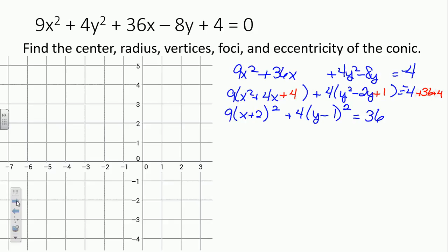Last step to get it into standard form: divide everybody by 36. So 9 over 36 gives us x plus 2 squared over 4. And 4 over 36 gives y minus 1 squared over 9 equals 1.